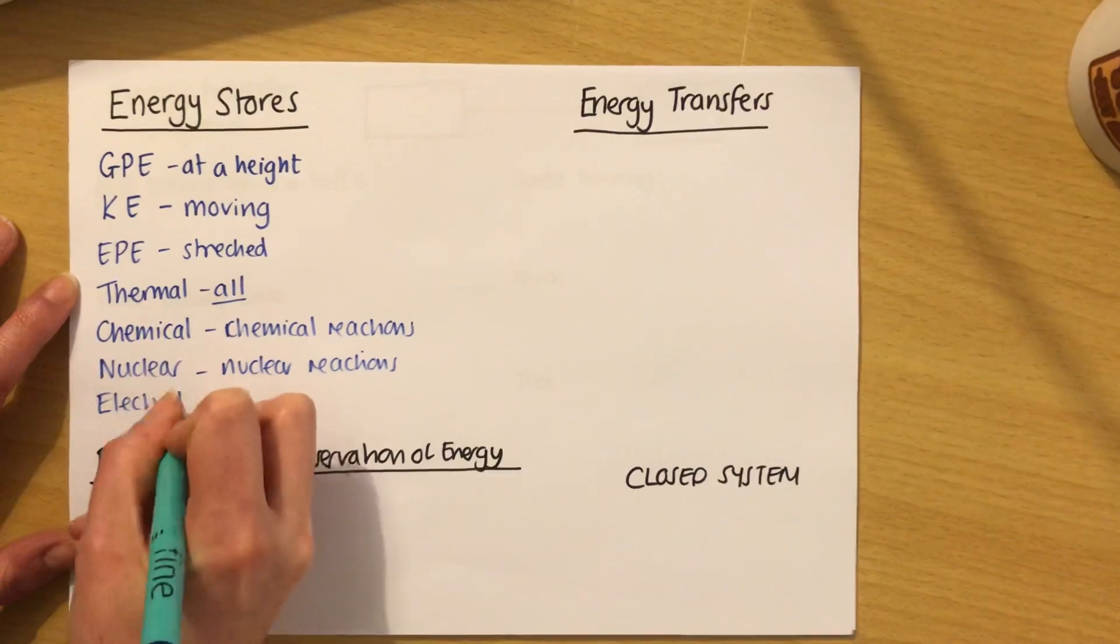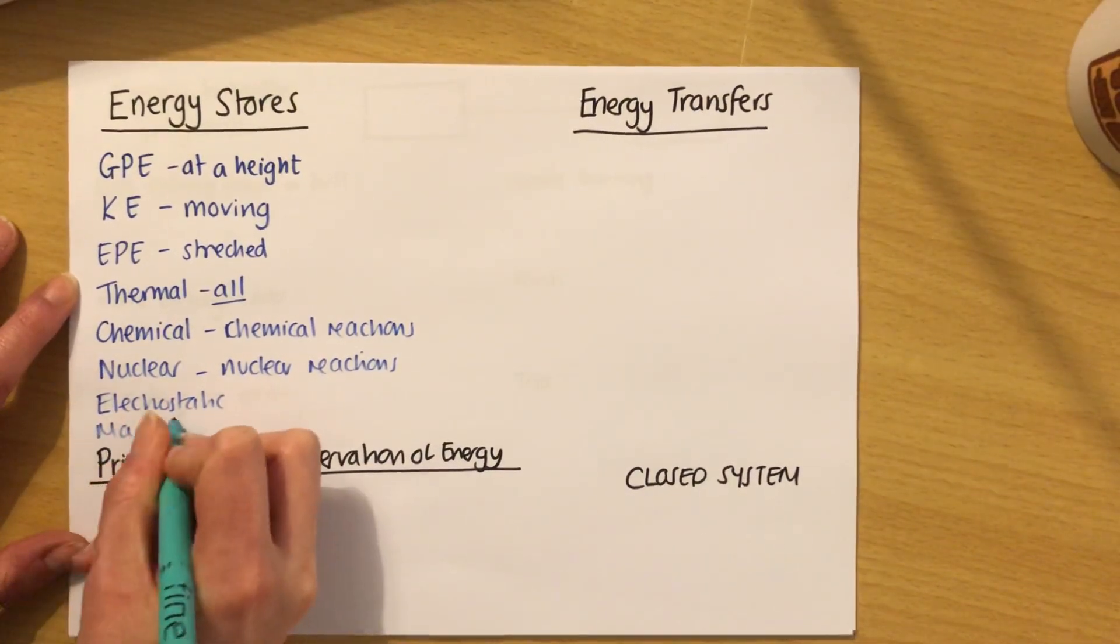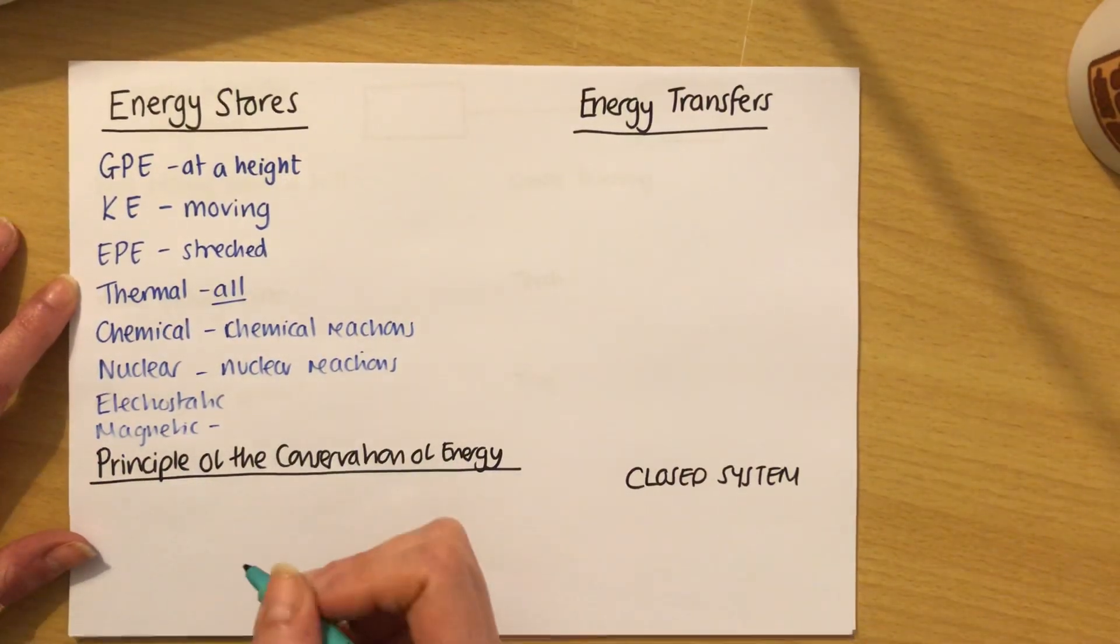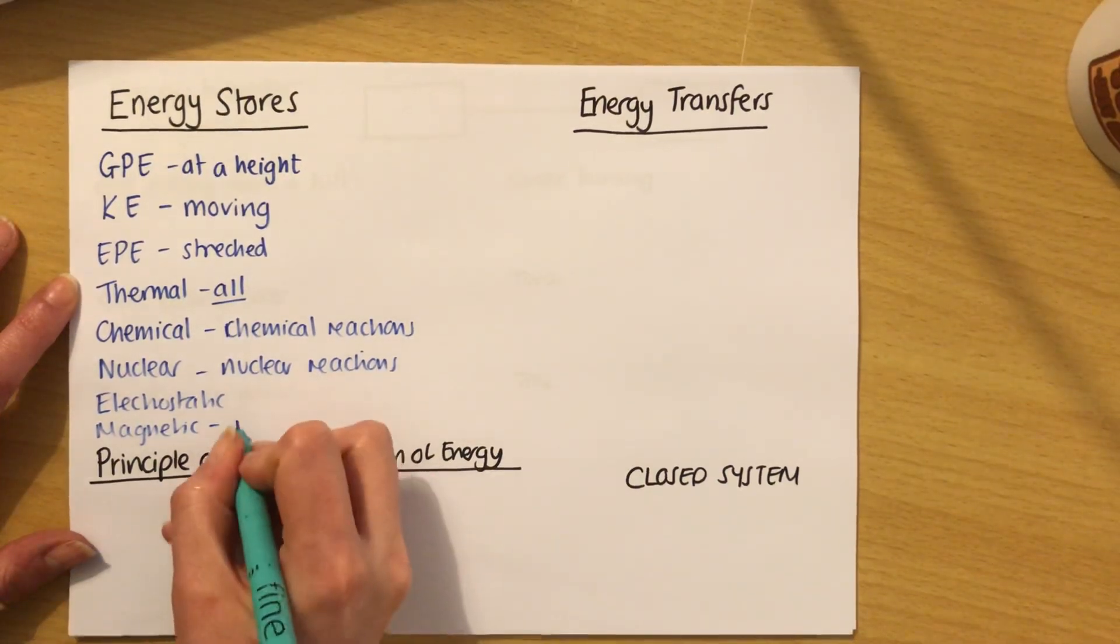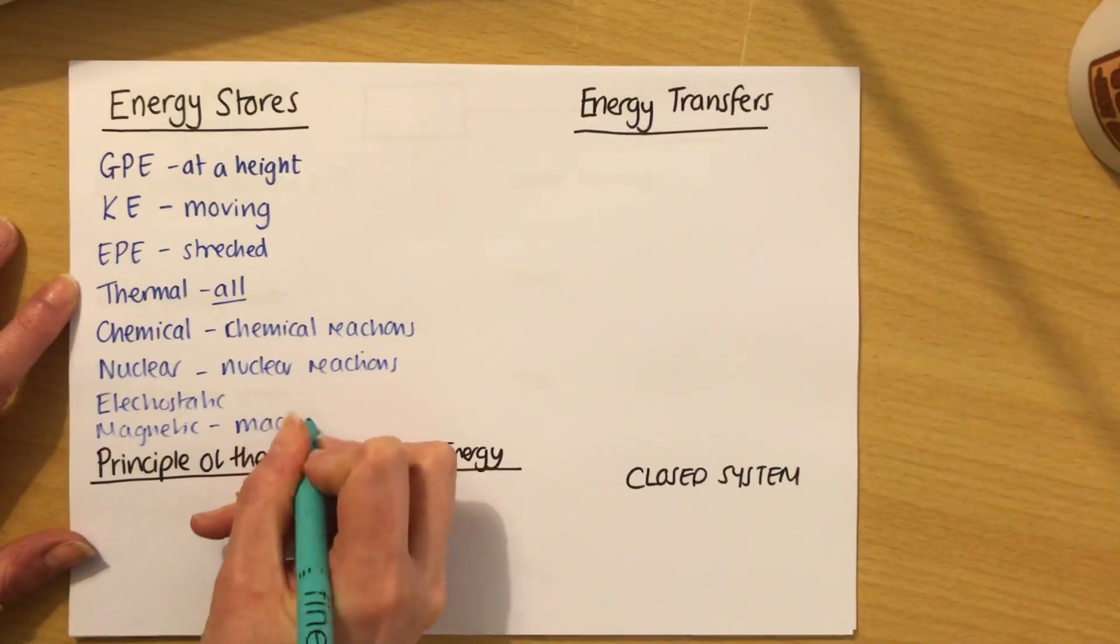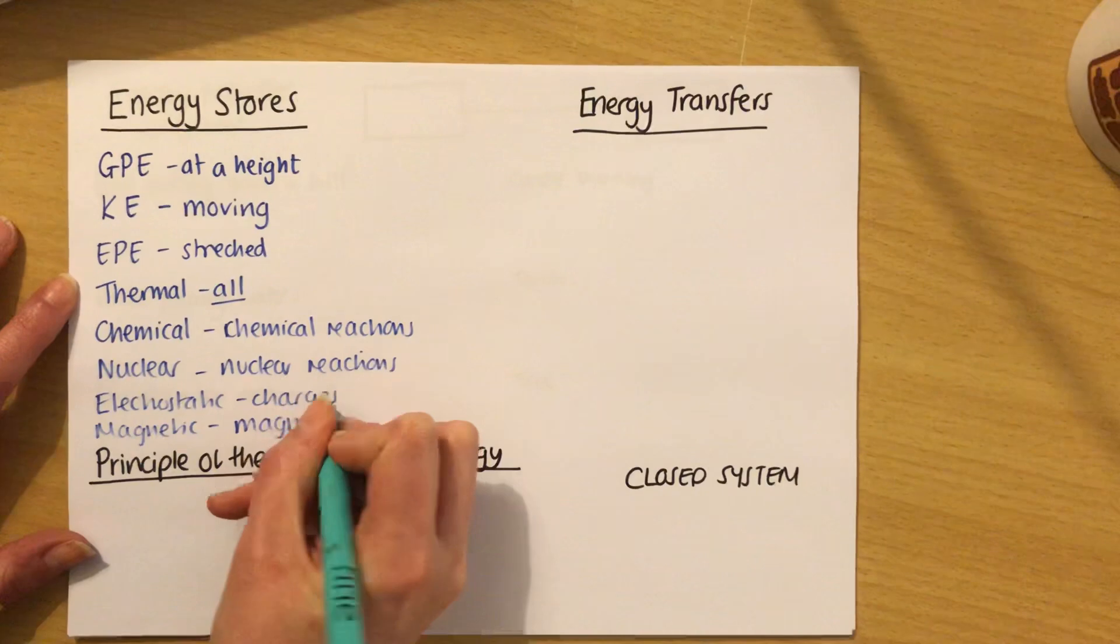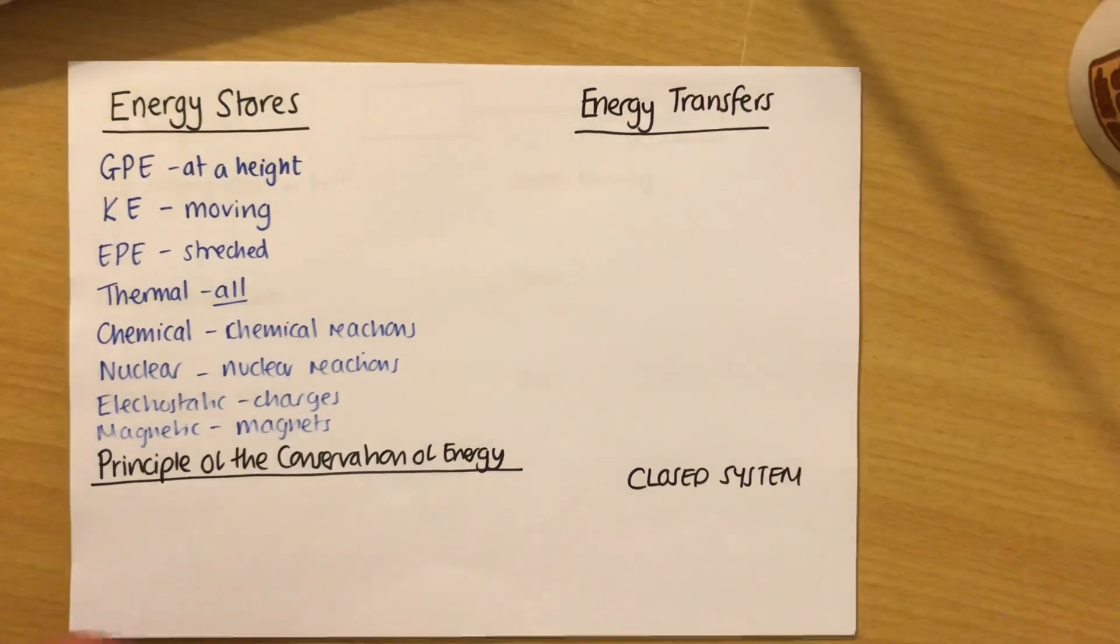Then we've got two more: electrostatic and magnetic. These are very much linked together. Magnetic energy, think about if you've got two magnets that are held together because they're attracting. They've got some energy. It takes work to pull them apart. So this will be between magnets. And electrostatic energy is the same but between charges. If you've ever noticed that when you rub a balloon on a jumper and stick it to a wall, it will actually stick because it's electrostatically attracted to the wall. So those are the eight energy stores.